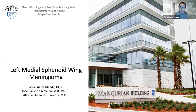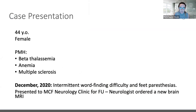This is a picture of the neurosurgery building at the Mayo Clinic for all those visiting from other parts of the world. The case: we have a 44-year-old female patient with a past medical history remarkable for beta thalassemia anemia and multiple sclerosis.